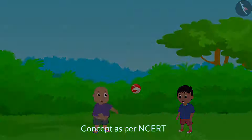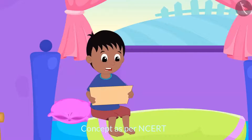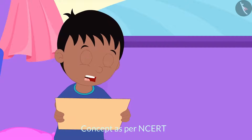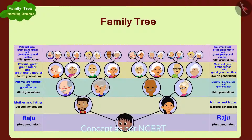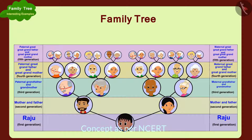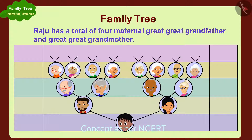When Raju returned home after playing in the park, he saw the family tree his father had made on the sofa. He wonders: out of so many people, how many maternal great-great-grandfathers and great-great-grandmothers does he have? Raju's maternal great-great-grandfather and great-great-grandmother are his mother's great-grandfather and great-grandmother. In total, Raju has four maternal great-great-grandfathers and great-great-grandmothers.